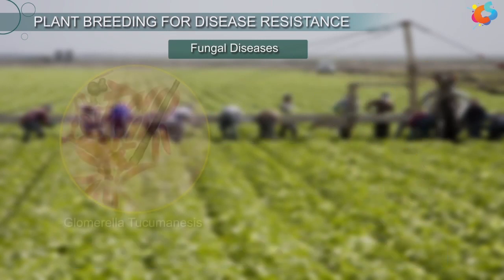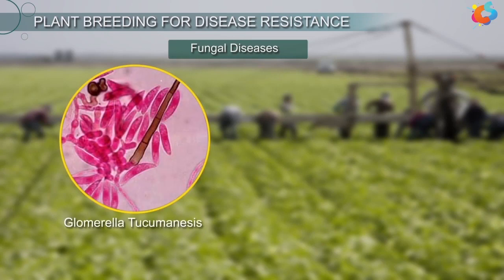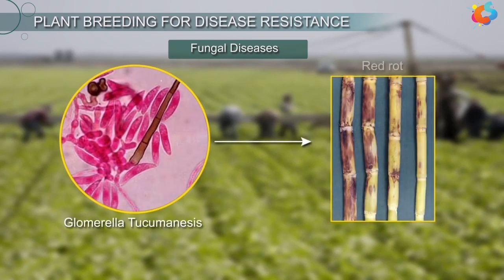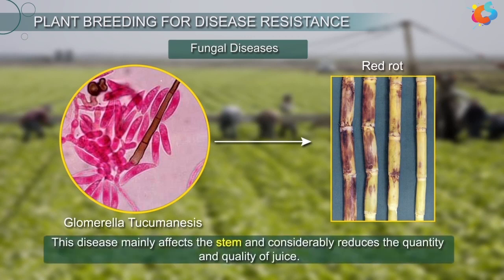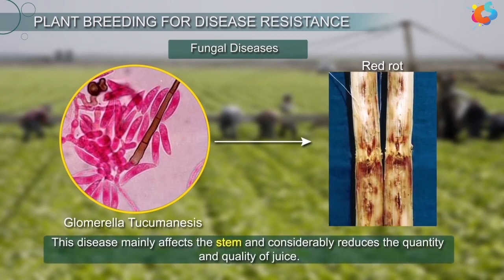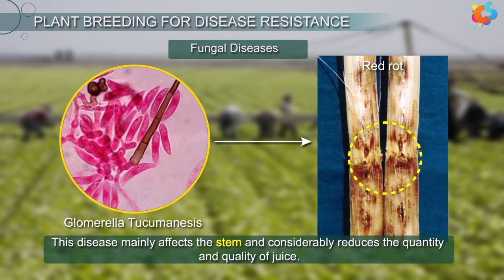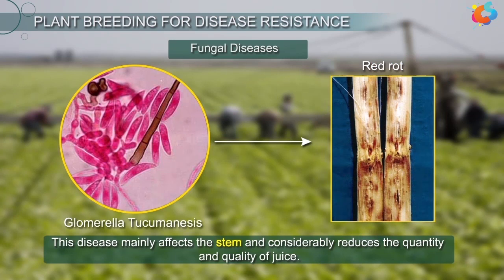Another fungus called Glomerella tucumanensis causes a disease called red rot in sugarcane. This disease mainly affects the stem and considerably reduces the quantity and quality of juice.